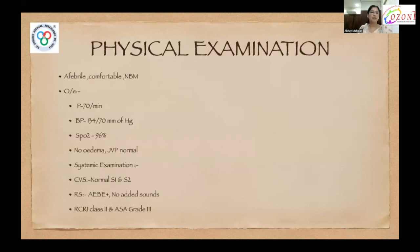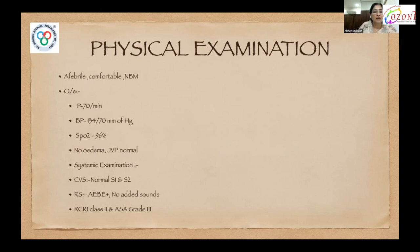On physical examination, patient was averagely built, afebrile, comfortable, and kept NBM. Pulse was 70 per minute, blood pressure was 134/70 mmHg, oxygen saturation was 96% on room air. No edema, no clubbing, no cyanosis. JVP was normal. On systemic examination, both heart sounds were normal with no evidence of any murmur or S3 gallop. On respiratory system, air entry was equal bilaterally with no added sounds. According to ASA grading, patient was accepted as ASA grade 3, and according to the revised cardiac risk index, patient was in class 2.